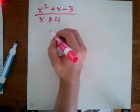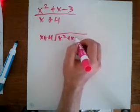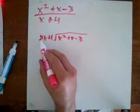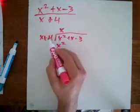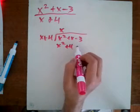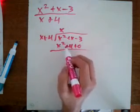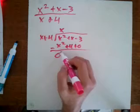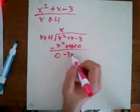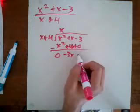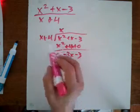To find it, we do polynomial long division: x plus 4 into x squared plus x minus 3. We ask what do we multiply by x to get x squared — that's x. So x times x is x squared, and x times 4 is positive 4x. I'll put a zero placeholder. Then we do our subtraction: x minus 4x gives negative 3x, and negative 3 minus 0 is still negative 3.